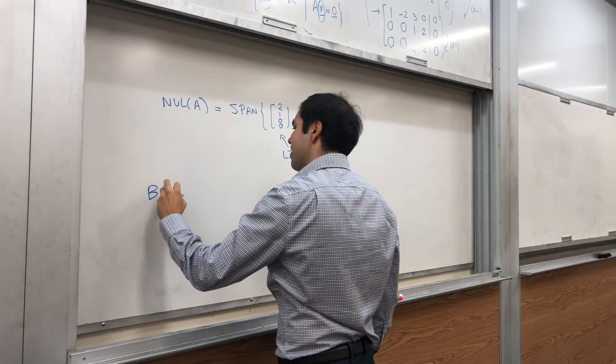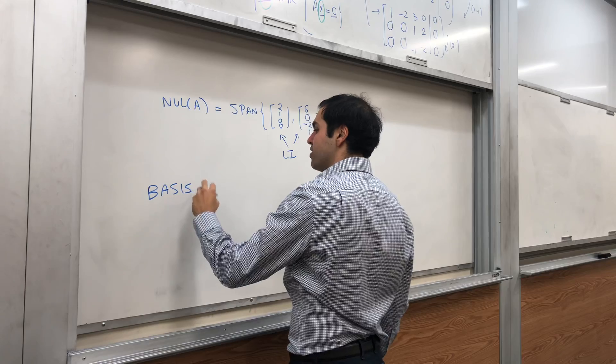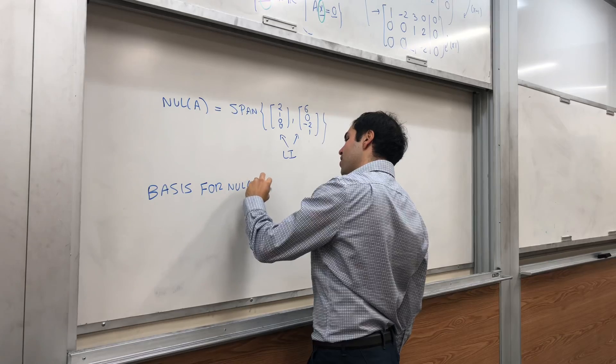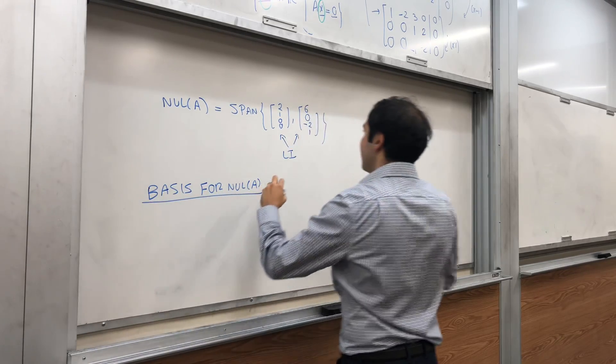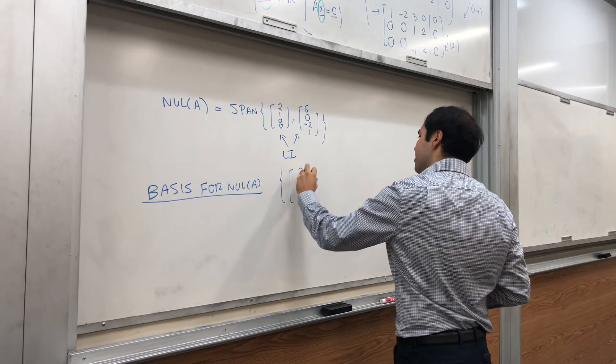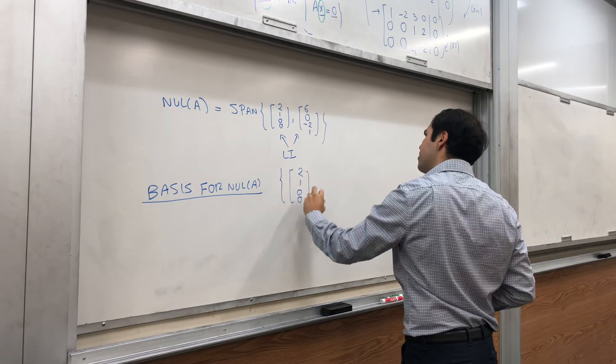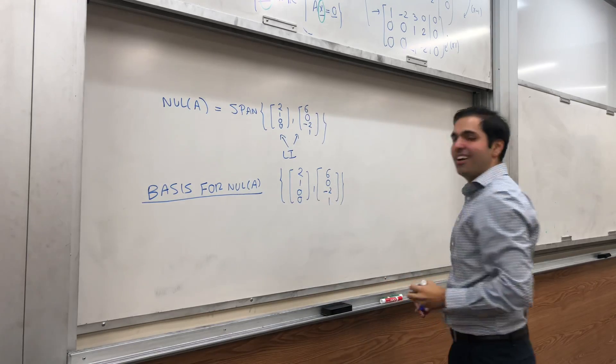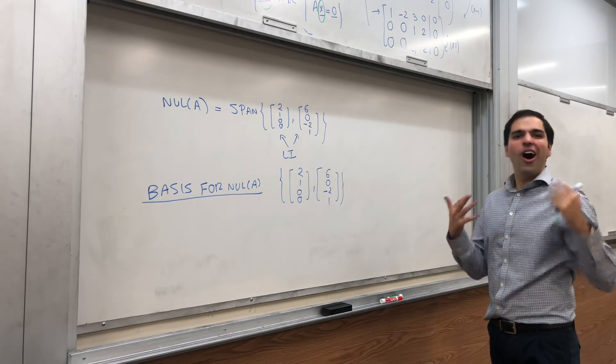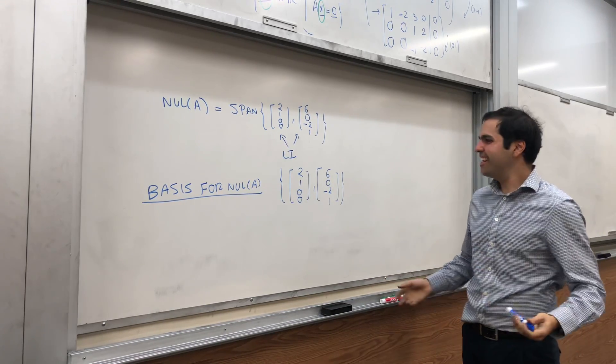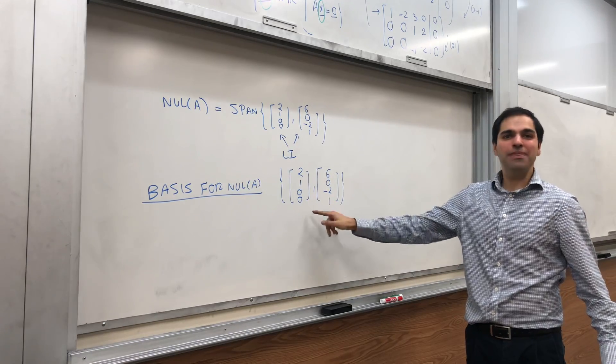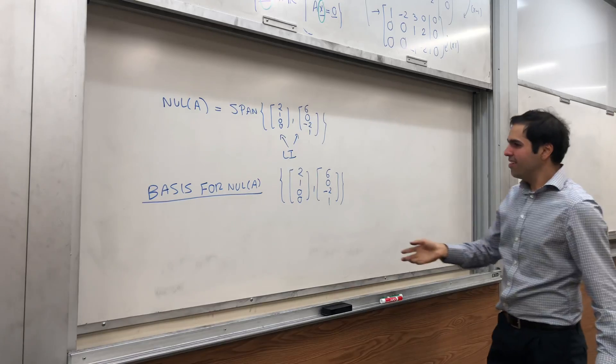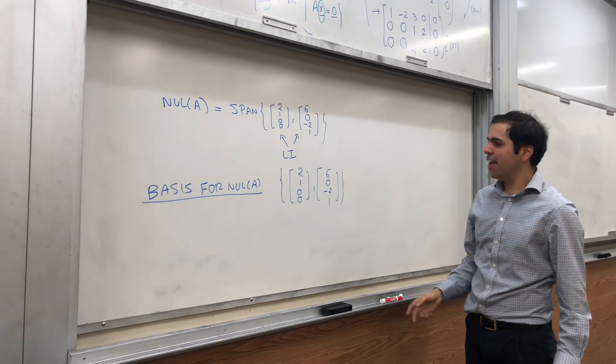So, the correct question will then be, find a basis for null space of A. Well, a basis is simply those two vectors: [2, 1, 0, 0], and [6, 0, minus 2, 1]. I know there's a song, You will always be my baby. Well, this will always be a basis. Okay? So, in particular, this is a basis for null of A.